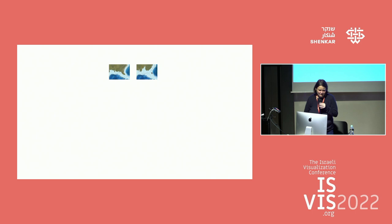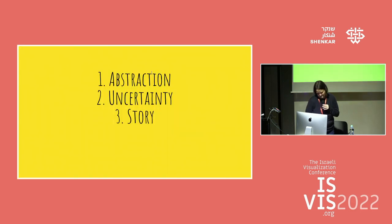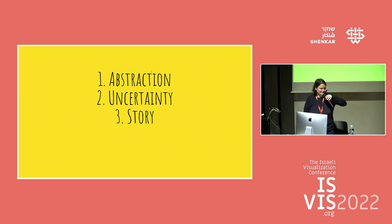So those are the knobs we have to deal with — abstraction, uncertainty, and story. I think that gets us back on time, and I can take questions if you're interested; otherwise I'm looking forward to learning from you today.